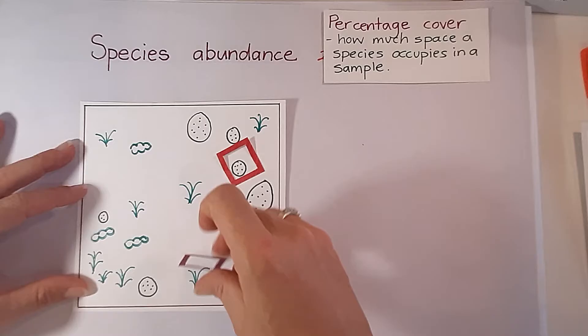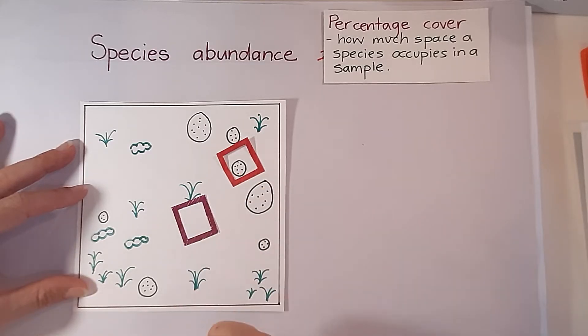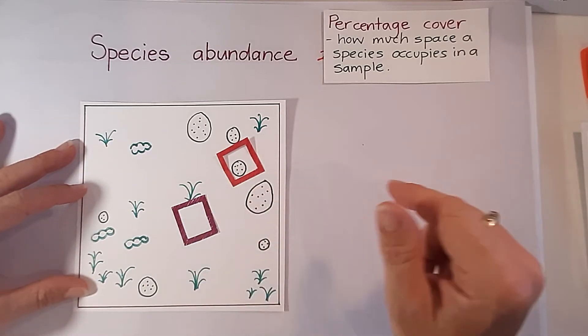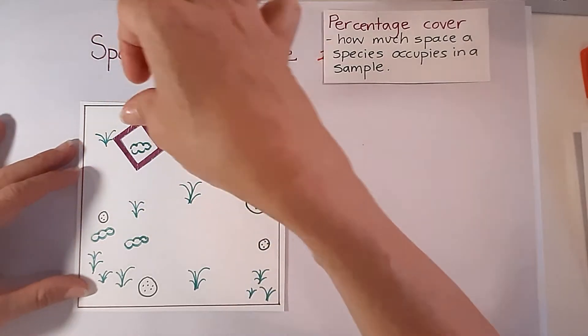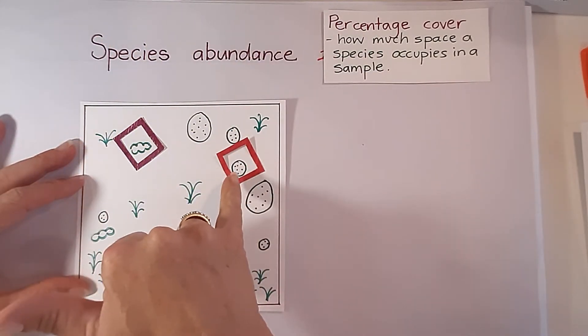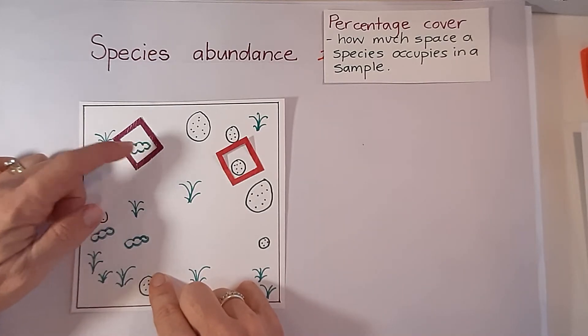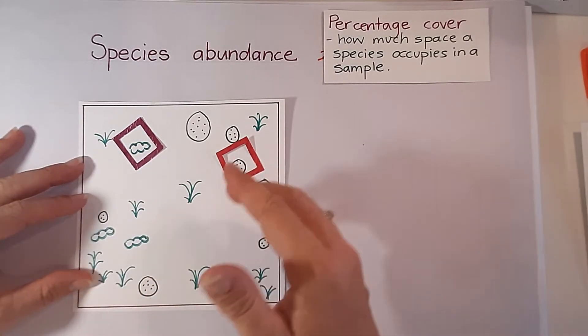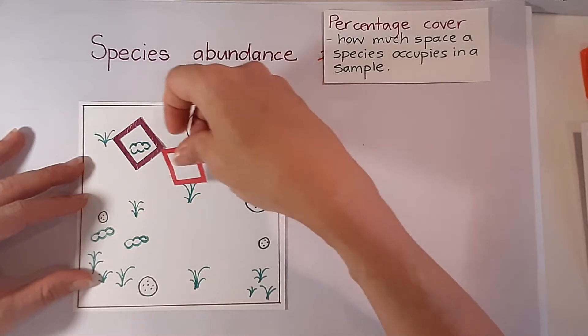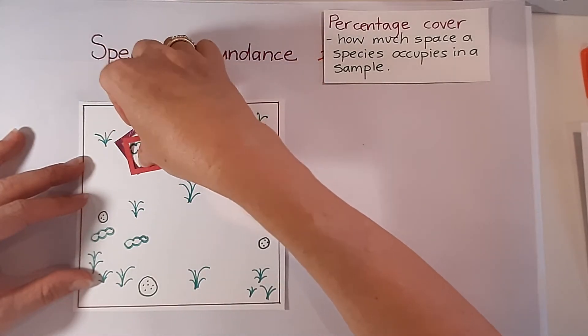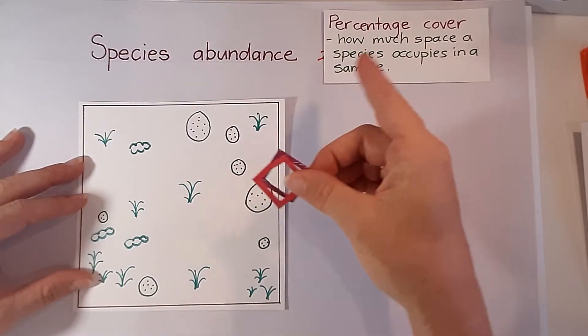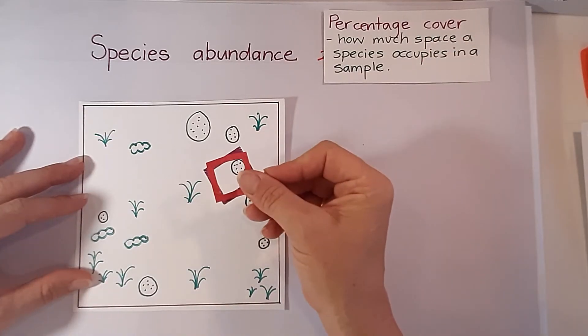If we were to throw it out again there's zero percent cover for the particular dotty species. We throw it again, it's again zero percent for this species but we could calculate the percentage cover for the bushy species. To work it out as a whole we could then work out the average percentage cover. So that's one way for percentage cover using quadrats.